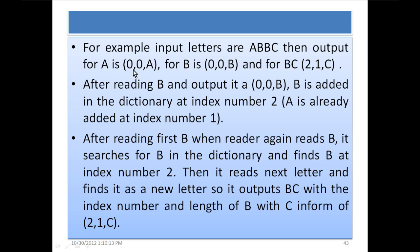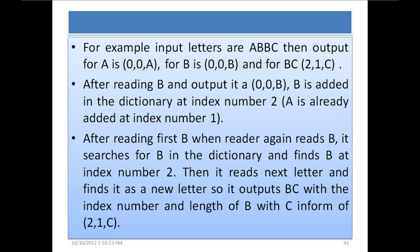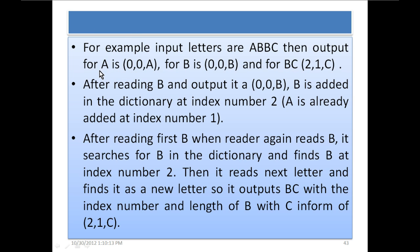As you can see, for A the output is (0, 0, A). Because when A is received, the parser searches the dictionary to find if there is any letter A in it and finds none. There is also no other letter associated or grouped with this A. So the index is 0 and the length is also 0, because there is no other letter in the dictionary to be referenced.